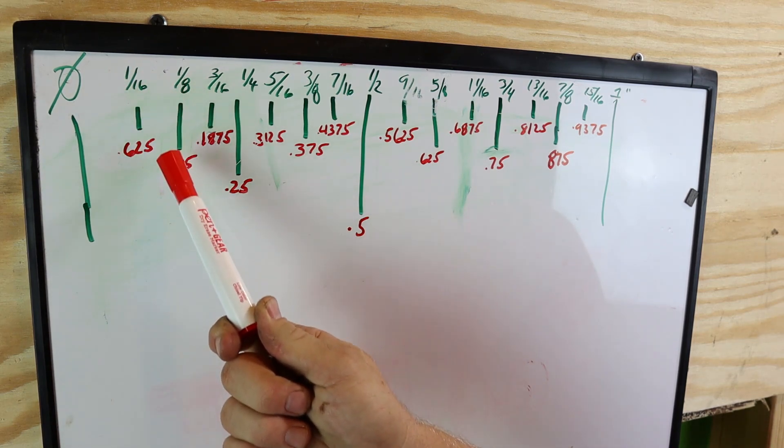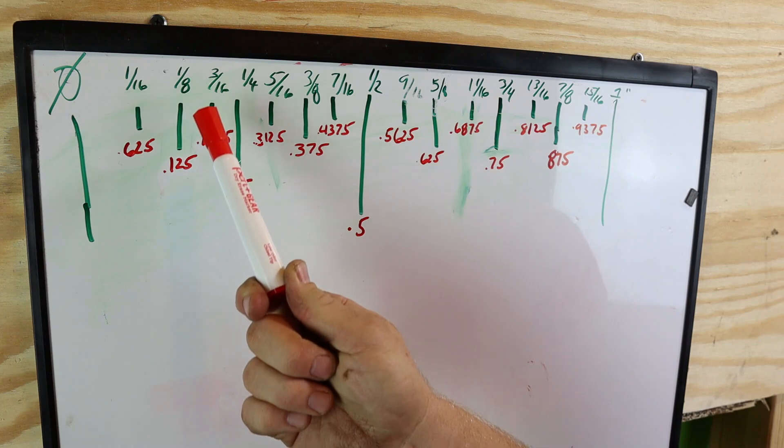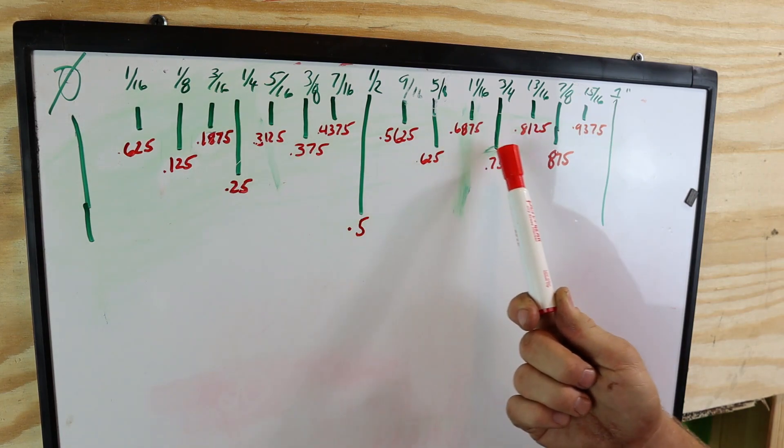So a sixteenth is 0.0625, an eighth is 0.125, three sixteenths is 0.1875, and so on and so forth. You can see what we got going on here.